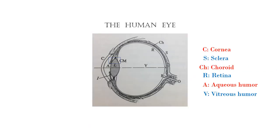First of all, let's try to understand a bit about what exactly is the problem with the eye that is dealt with a laser. In the figure, you see the structure of the eyeball. Except our cornea, the entire eyeball has an outer covering called sclera. At the rear side of the eyeball,